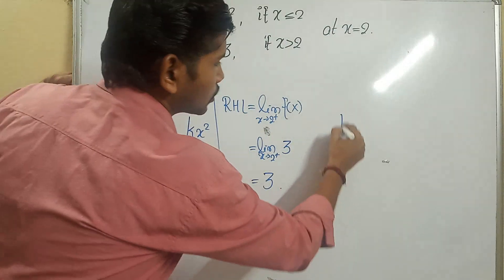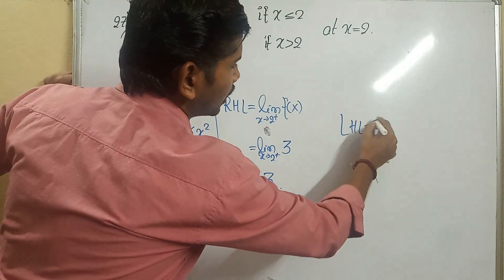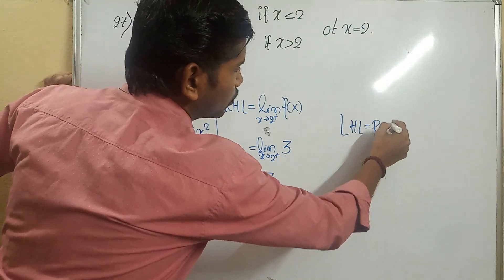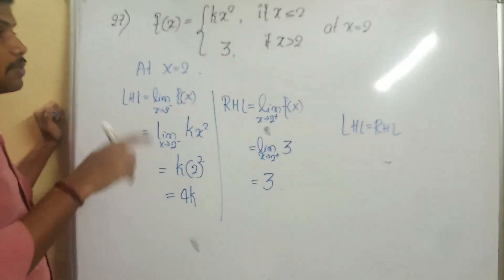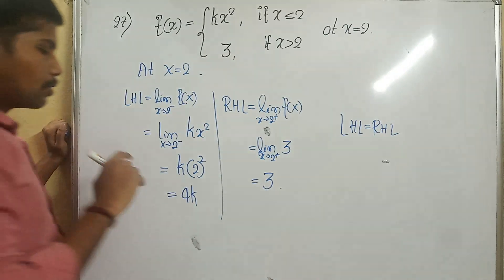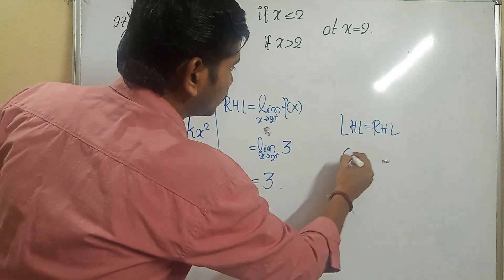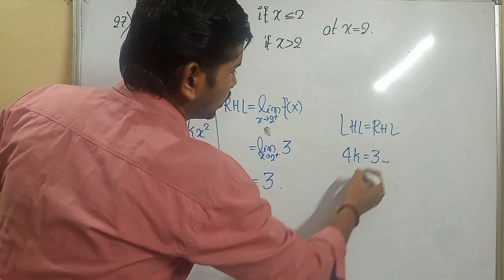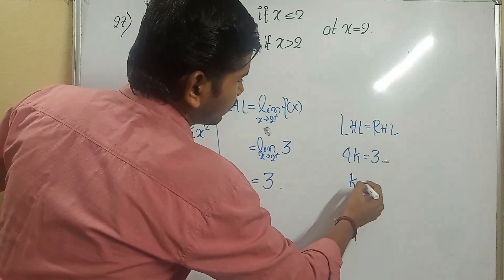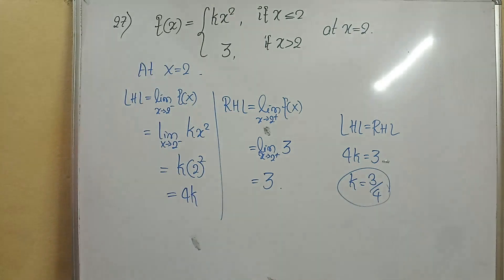The given function is continuous, so LHL must equal RHL. LHL is 4k, RHL is 3. Therefore k equals 3 by 4. We got the value.